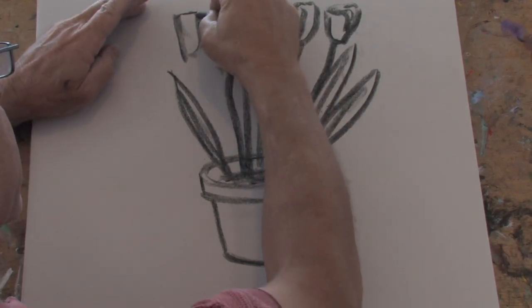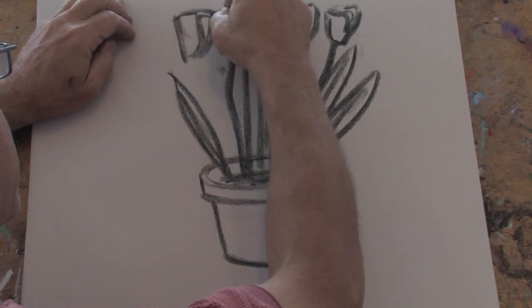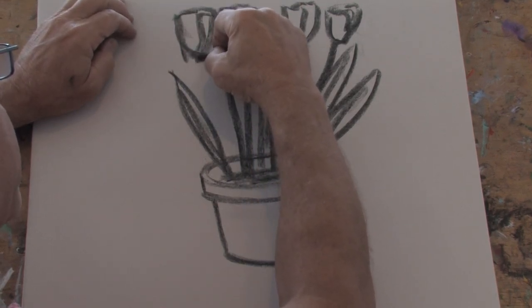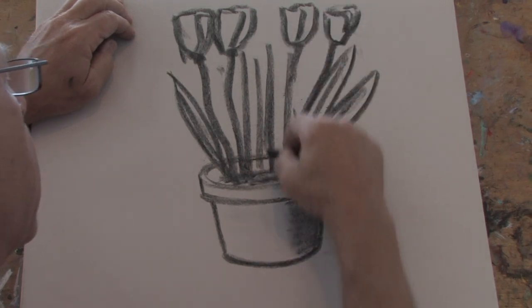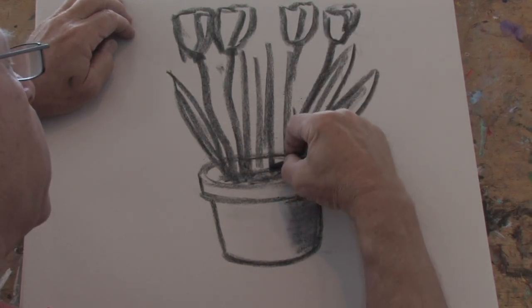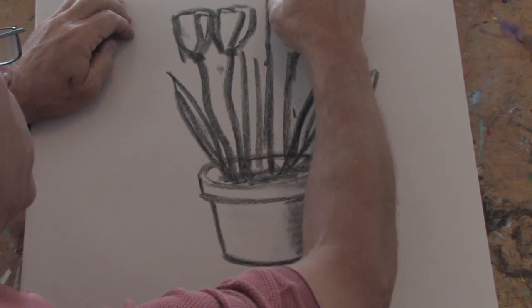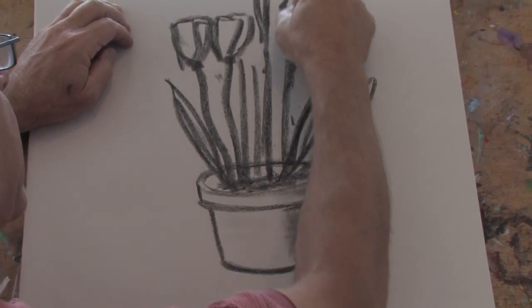We're just having fun building this shape of the flower and connecting the stem right down into the pot. We can even put a little short or a tall one right in the center and bring it up to about here.